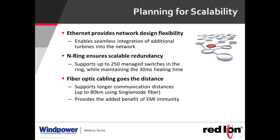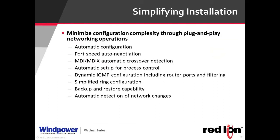Planning for scalability: Ethernet is an excellent choice because devices can seamlessly integrate into the network. In a ring topology with Intron switches, we have a protocol called nRing for managing rings, which seamlessly supports up to 250 managed switches in the ring with no degradation to the 30-millisecond healing time. So we can support a very large wind farm. Fiber optic cabling is also an excellent choice because of the distance it can cover — using single-mode fiber, it can reach up to 80 kilometers, providing both distance coverage and EMI immunity.